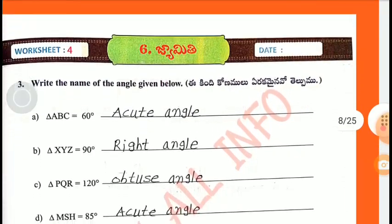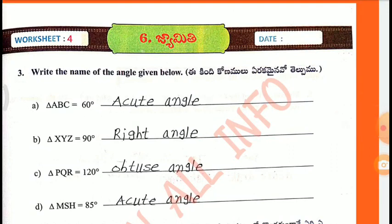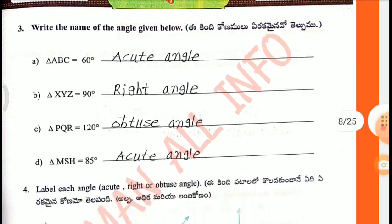Worksheet 4, Third one: Write the name of the angles given below. A: 60 degrees is an acute angle. Angle XYZ equals 90 degrees — right angle. Triangle PQR equals 120 degrees — obtuse angle. Angle 85 degrees is an acute angle.